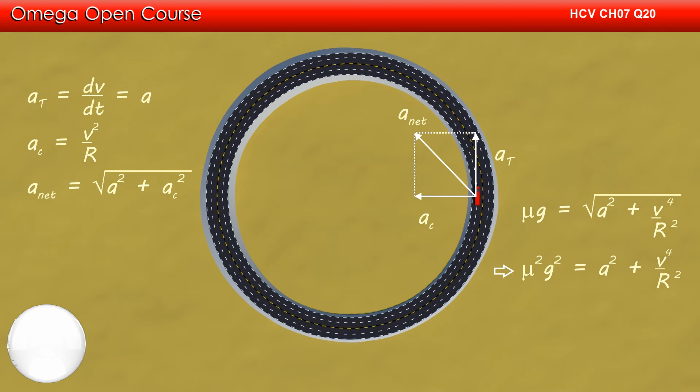Squaring both sides, we get μ²g² = a² + v⁴/R².